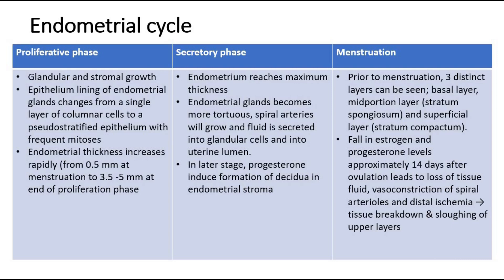Before the menstrual phase begins, three layers can be seen on the endometrium: the basal layer, the mid-portion layer also known as the stratum spongiosum, and the superficial layer, the stratum compactum. When there is a fall in oestrogen and progesterone levels around 14 days after ovulation, it will lead to loss of tissue fluid, vessel constriction of spiral arterioles, and distal ischemia. This causes tissue breakdown and sloughing of the upper layers, which is the menstruation phase.